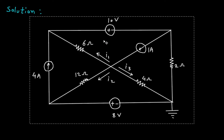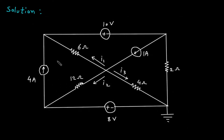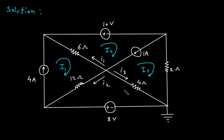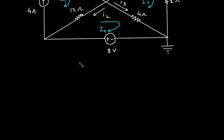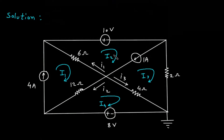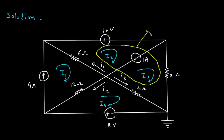Solution: first we will redraw the circuit. Now let's assume this is mesh number 1 with current I1, this is mesh number 2 with capital I2, this is mesh number 3 with current I3, and this is mesh number 4 with current I4. As we can see that I1 is equal to 4 ampere. Also, between mesh 2 and 3 there is a current source, so this forms a supermesh.